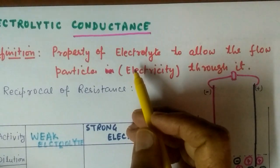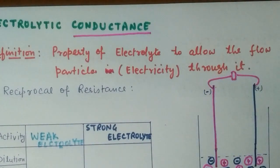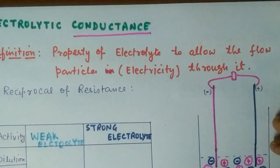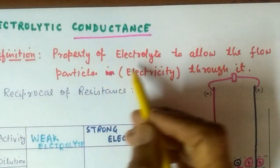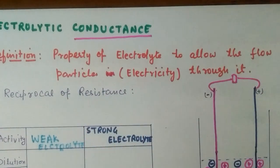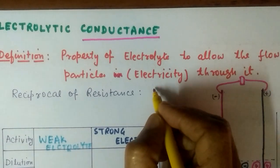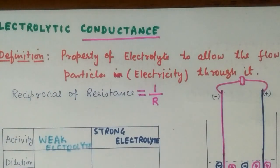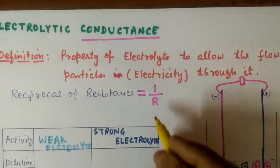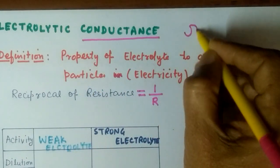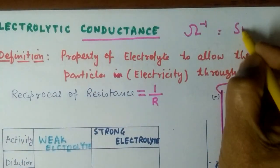Electrolytic conductance is the property of an electrolyte by virtue of which it allows the flow of charged particles — that is, cations and anions — and the flow of these charged particles is called electricity. It is the reciprocal of resistance. If resistance is denoted by R, then conductance is equal to 1/R. Resistance resists the flow of charged particles; conductance is the allowance — it is the opposite of resistance. The unit of resistance is ohm, so the unit of conductance is ohm inverse, also called Siemens.